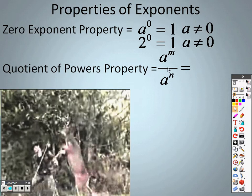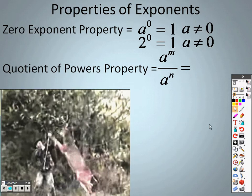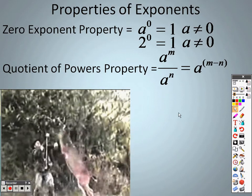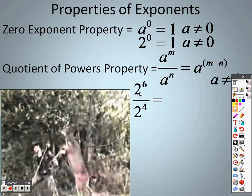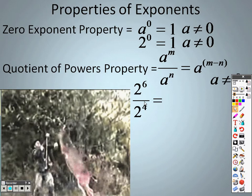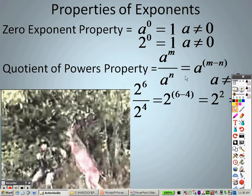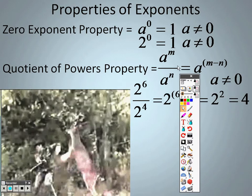Well, with division, instead of adding the answers, we are going to subtract them. It's just going to be m minus n. So with this problem, 2 to the 6th and 2 to the 4th, all you're going to do is take 6 minus the 4, and you end up with 2, and 2 squared is 4. That's basically all that's saying.